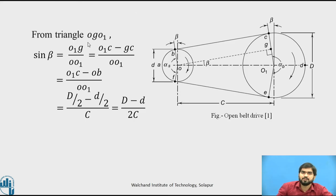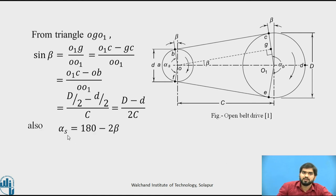If you observe triangle O, G, O1, we can easily calculate the value of sin beta. From simple geometrical considerations, sin beta is equal to (capital D minus small d) divided by 2c. The wrap angle alpha S for the smaller pulley is equal to 180 minus 2 times beta, and the wrap angle alpha B for the larger pulley is 180 plus 2 times beta.